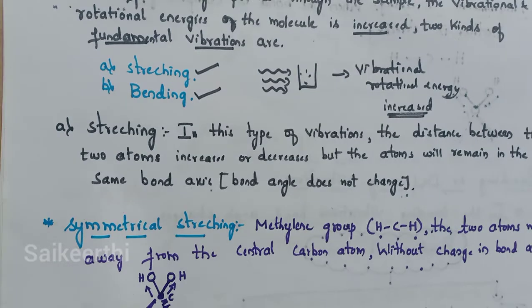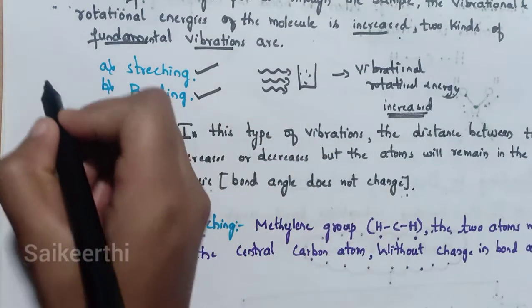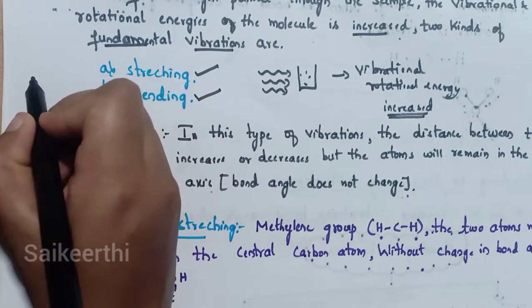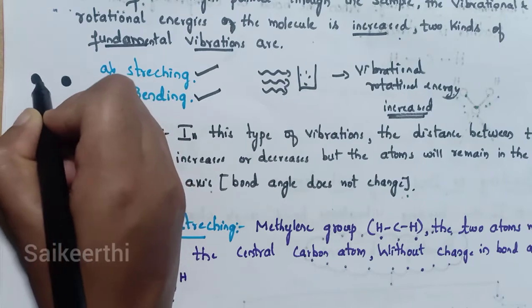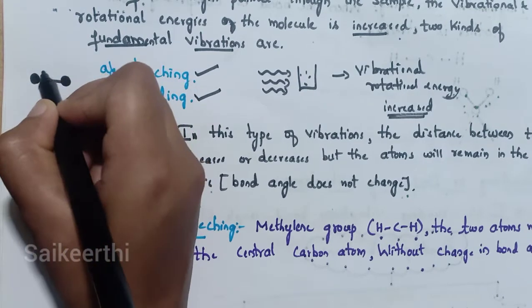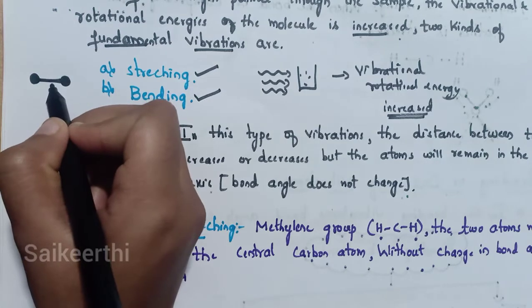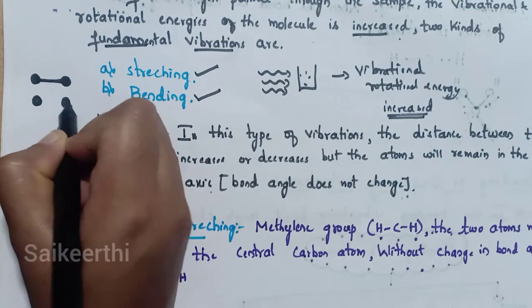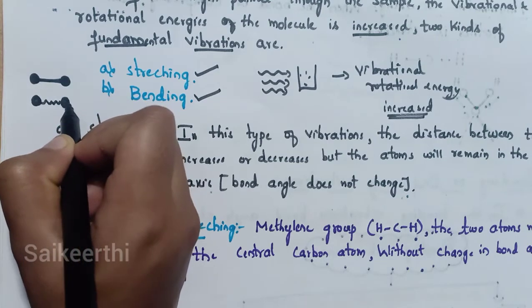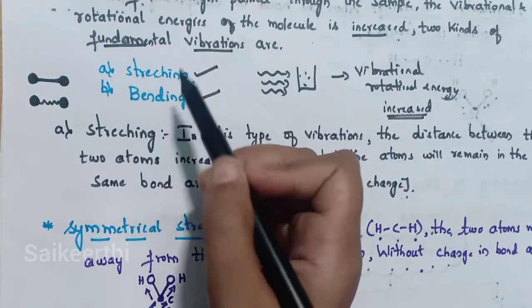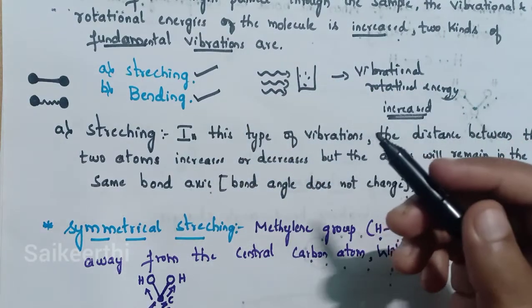You should keep in mind that the atoms in molecules are not held rigidly. The atoms in molecules are considered as balls and the bonds between them are considered as springs. For example, in a molecule consisting of two atoms, each atom is visualized as a ball and the bond is visualized as a spring. Fundamental vibrations — stretching and bending — arise from excitation from the ground state to the lowest energy excited state.